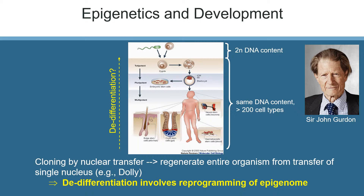He found that this transformation occurred more readily the younger the organism from which the mature nuclei were extracted. The techniques he developed were later modified and used to create the clone sheep Dolly, the most famous sheep in the world. He won the Nobel Prize in Physiology and Medicine in 2012 for his discovery of nuclear transfer. Ultimately, de-differentiation involves reprogramming of the epigenome.